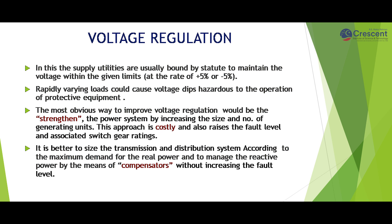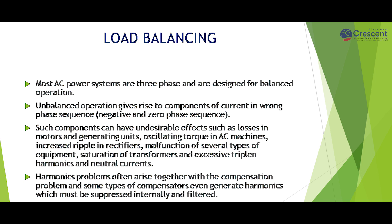The obvious way to improve voltage regulation would be to strengthen the power system by increasing the size and number of generating units, but this approach is very costly and raises the fault level and associated switchgear ratings. The better option is to size the transmission and distribution system for maximum real power demand and manage reactive power using compensators, without increasing the fault level.